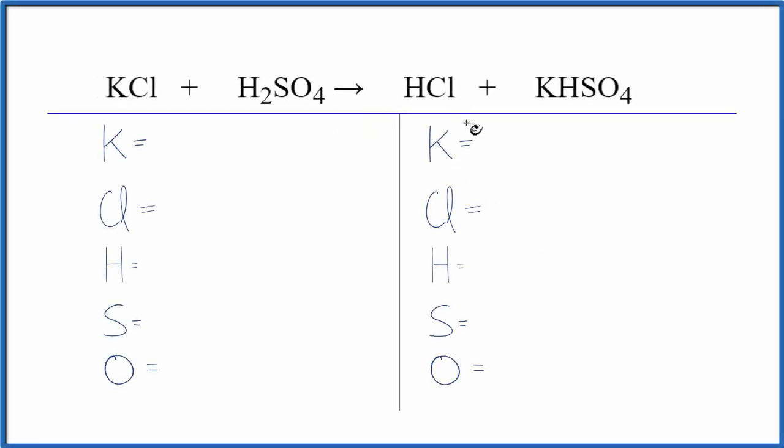This reaction is the first step in the process used to make K2SO4, potassium sulfate. So here we have potassium chloride and sulfuric acid. Let's balance the equation.